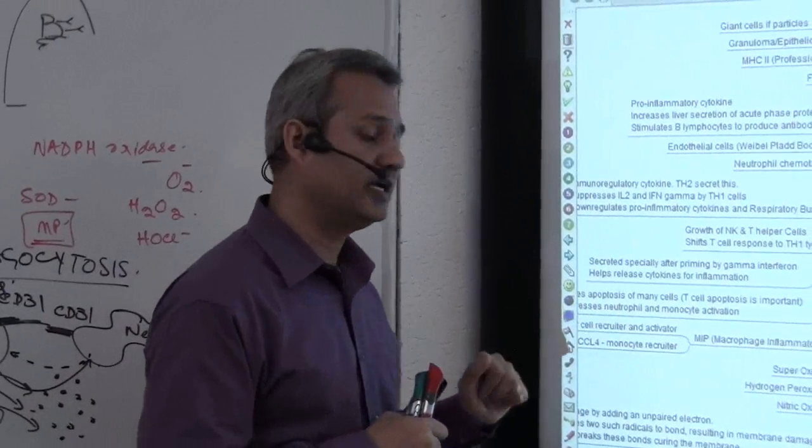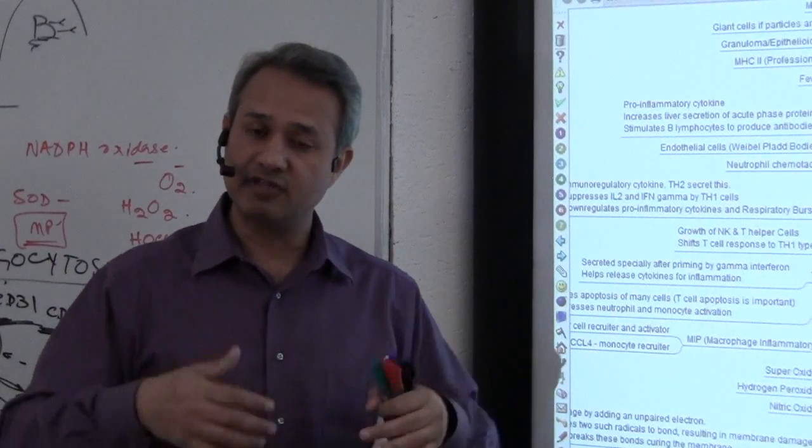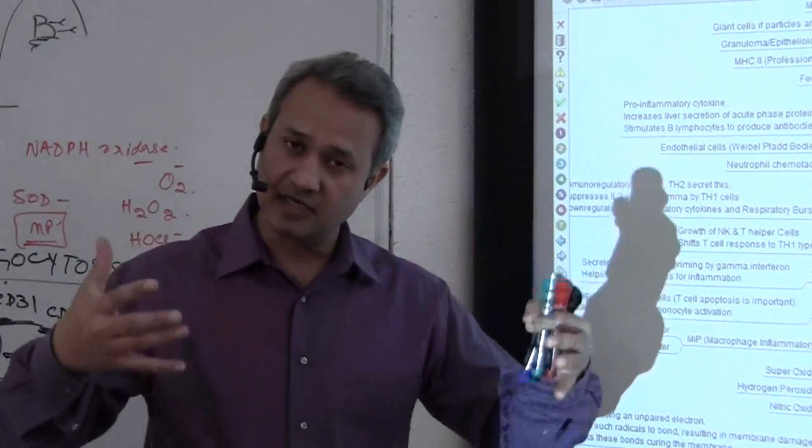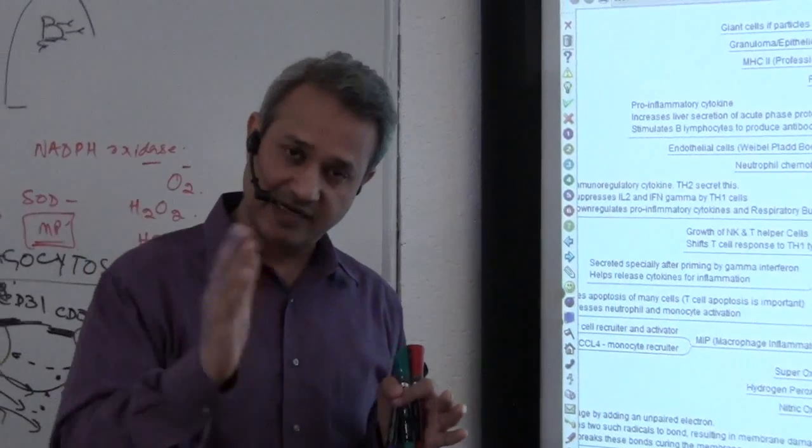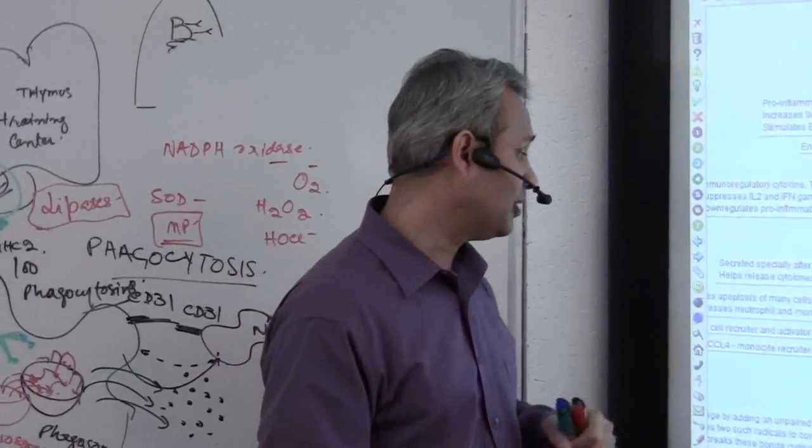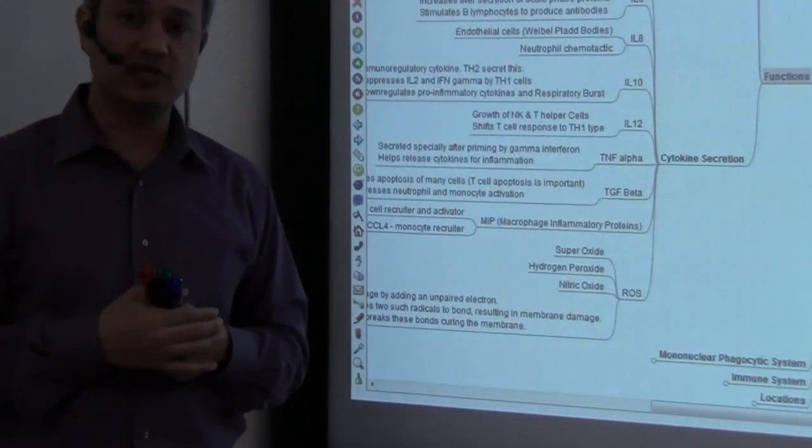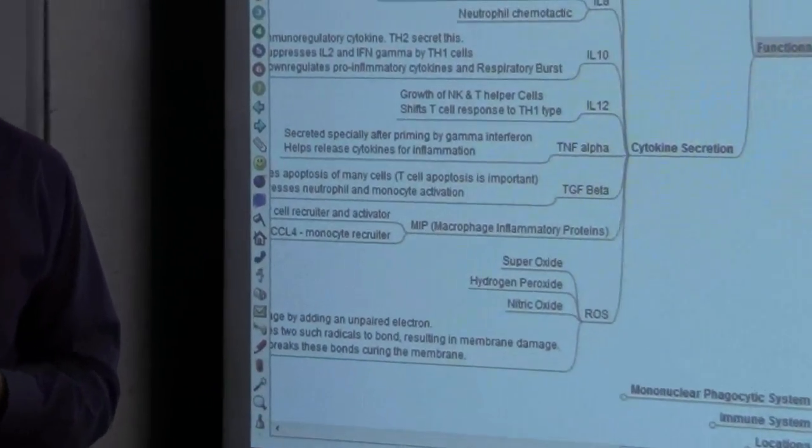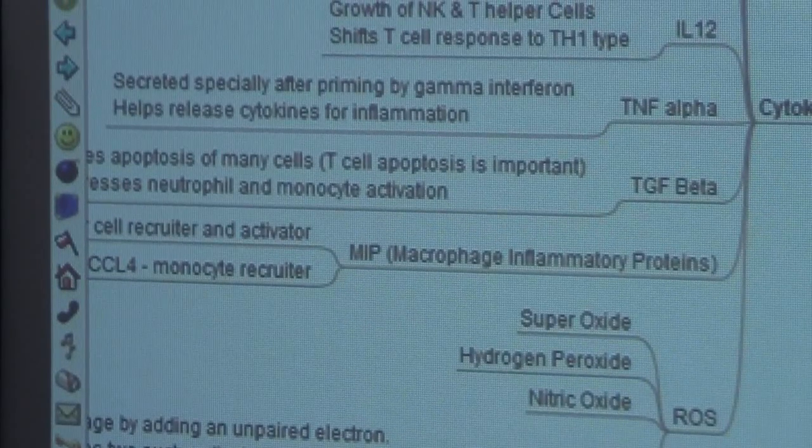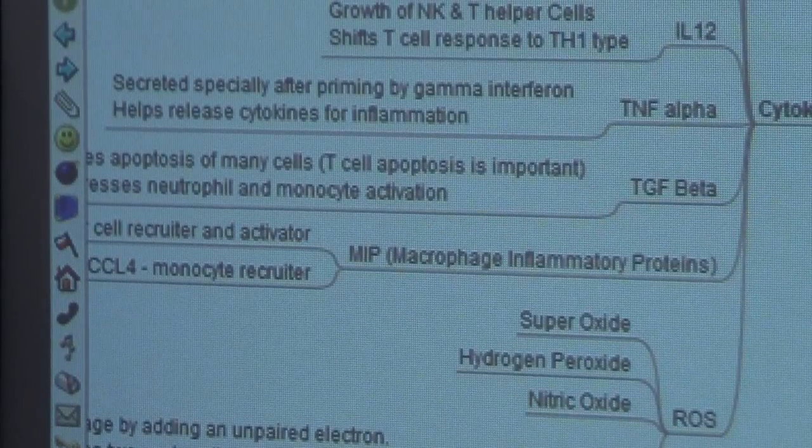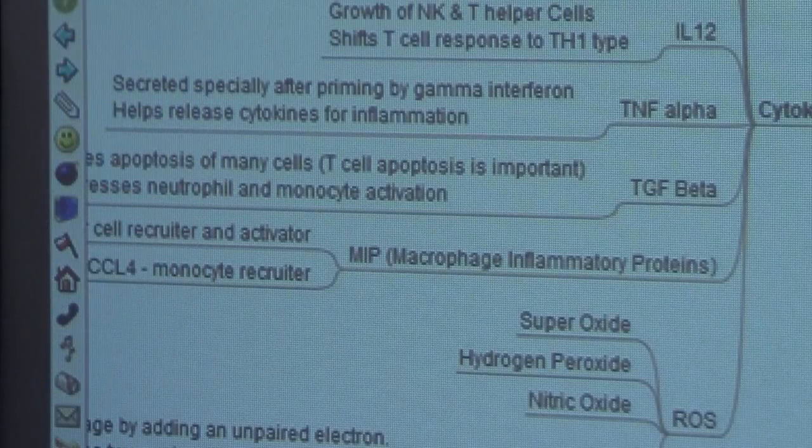TGF-beta's action causes apoptosis in T cells. When T cells are produced as a result of immune system activity, those extra T cells are killed by the tumor growth factor. Similarly, it causes neutrophils and monocytes to reduce their phagocytosis and cytokine secretions, and that's how it down-regulates the activity of the immune system.